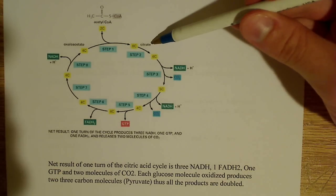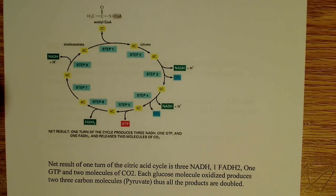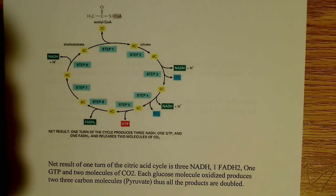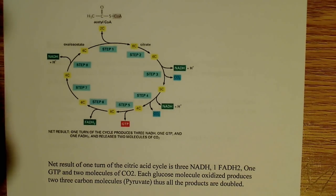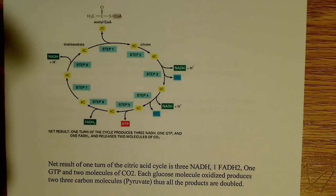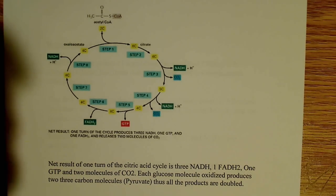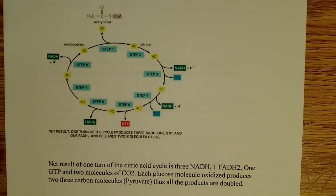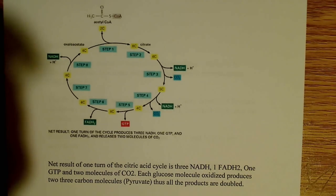In the second step, the citrate is converted by an isomerization reaction where citrate becomes isocitrate. There's not a whole lot of difference between the two — it's a small isomerization. It forms another six-carbon molecule. Oxaloacetate is a four-carbon molecule, and acetyl-CoA is a two-carbon molecule; when you combine them, you produce a six-carbon molecule. In the second step, the isomerization, you still have a six-carbon molecule and you form isocitrate, through an enzyme called aconitase.